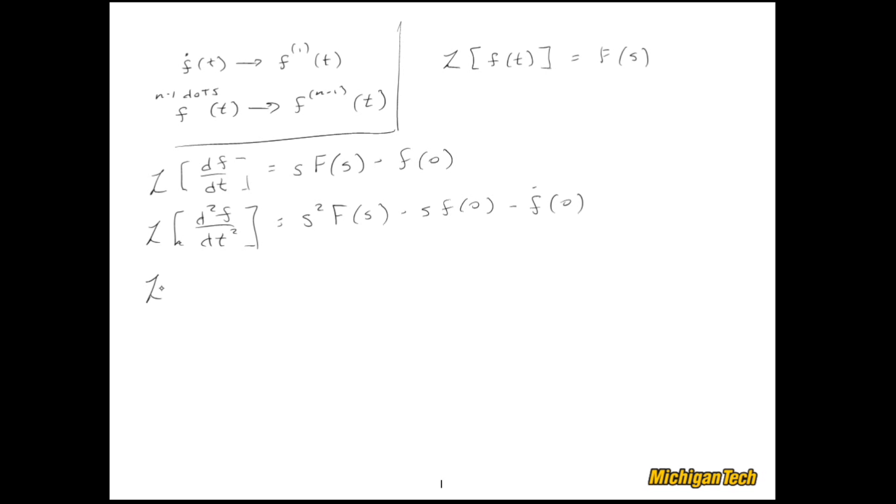And I can go all the way to as many derivatives as I like. So how about n derivatives? Then we'd get s to the n, capital F of s, minus s to the n minus 1, f0, minus, you kind of see where this is going, all the way down to f, n minus 1, at time equals 0. So finally, I use this notation that I introduced at the very beginning. Otherwise, I've been using dots everywhere, because that was pretty convenient.